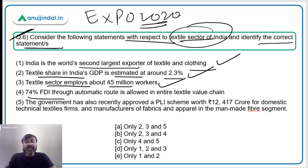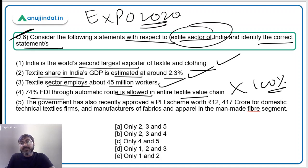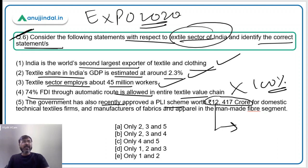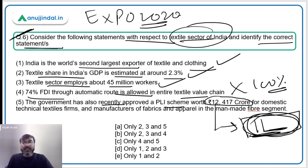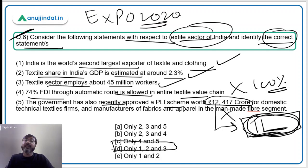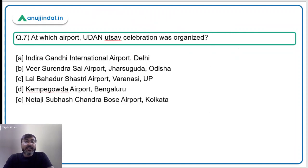74 percent FDI through automatic route is allowed in the entire textile value chain — this is incorrect; it is actually 100 percent. The government recently approved a PLI scheme worth Rs. 10,683 crore for textiles — the exact amount stated was also noted as requiring verification. Statements 4 and 5 are incorrect; only statements 1, 2, and 3 are correct — Option D is the correct answer.